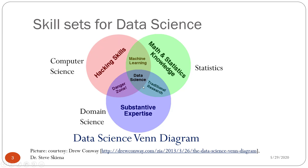The intersection between hacking skills and substantive expertise is called the danger zone. This is dangerous because if a person has decent programming skills and knows the domain a little bit but totally lacks knowledge of math and statistics, that's a very bad combination. As a data scientist, you'll need to use machine learning algorithms, and without math and statistics you won't know how those algorithms work.